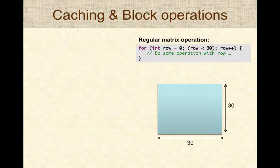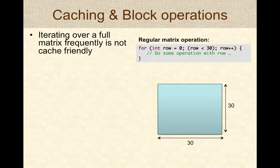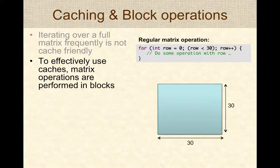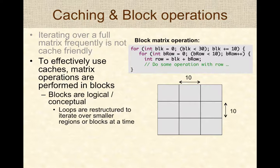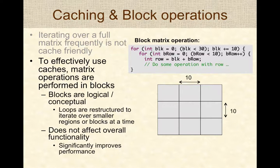A similar idea of working with blocks applies to matrix operations. Iterating over a full matrix along a row, even in a row-major fashion, is not fully cache-friendly because at some point you will have cache misses. To effectively use caches, matrix operations are typically performed in logical blocks — for example, 10x10 block sizes. The loops are structured to iterate over blocks of data, rather than the whole matrix, and iterating over blocks improves caching behavior, thereby improving program performance.